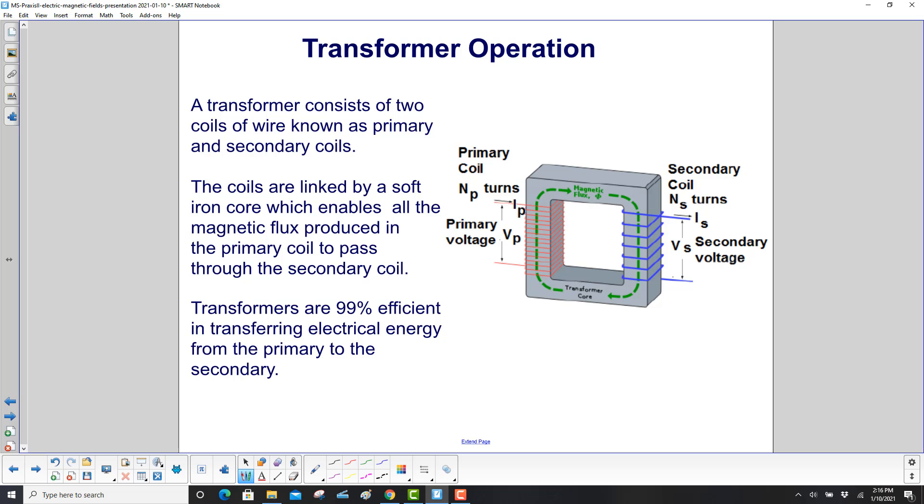A transformer consists of two coils of wire. Here's one coil, here's the other coil. You have a primary and a secondary coil. The coils are linked by a soft iron core, which enables all the magnetic flux produced in the primary coil to pass through to the secondary coil.